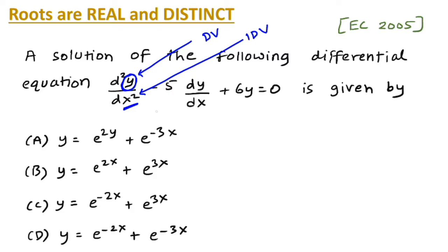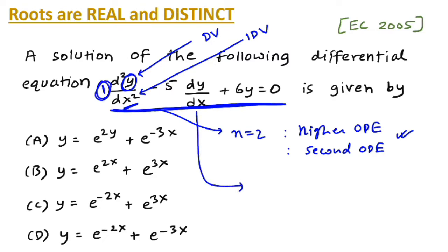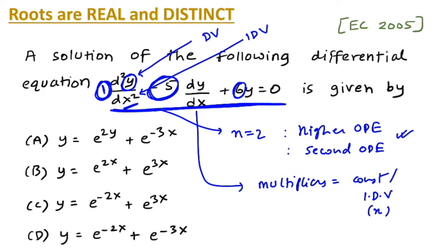The order here is 2, so this is a higher-order or second-order differential equation. Analyzing the equation further: the multiplier at the first differential coefficient is 1, at the second differential coefficient it is −5, and at y it is 6. Whenever the multipliers are constant or in terms of the independent variable x, the differential equation is also known as a linear differential equation.